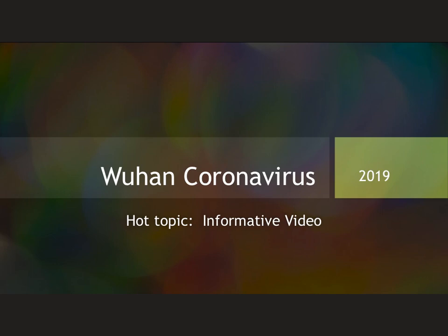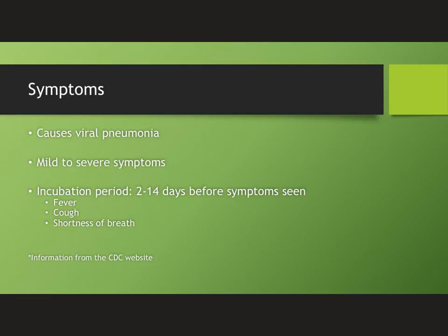The Wuhan coronavirus is a novel coronavirus which transferred to humans in late December 2019. It has been named as such due to its association with the Huanan seafood market or the surrounding area in Wuhan, China. This virus causes viral pneumonia with the most prominent symptoms being cough, fever, and difficulty breathing. Radiographs of most patients show invasive lesions in both lungs, though symptoms can vary from mild to severe with some patients being asymptomatic. The incubation period can last anywhere from 2 to 14 days according to the CDC, based on the MERS virus.